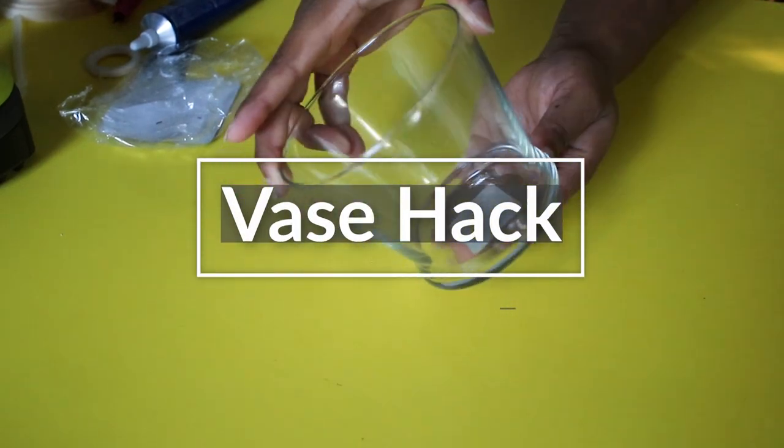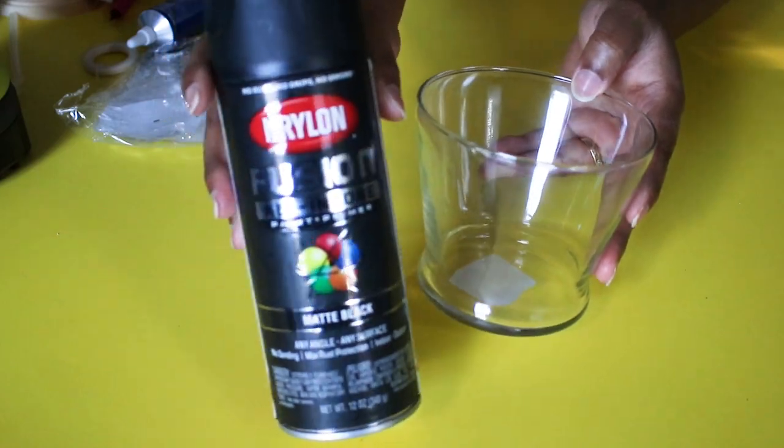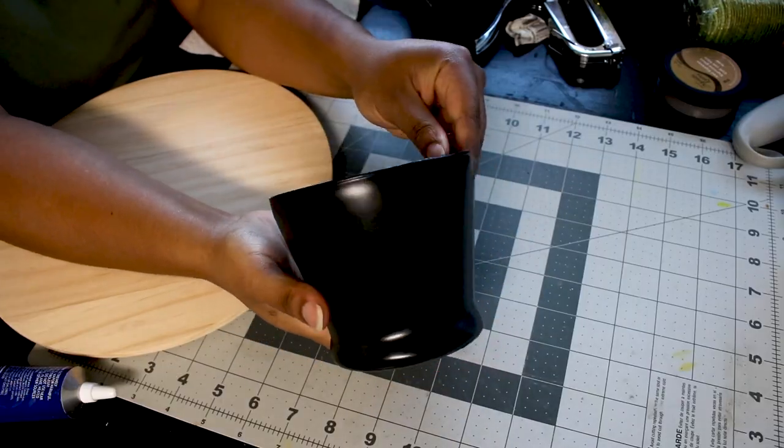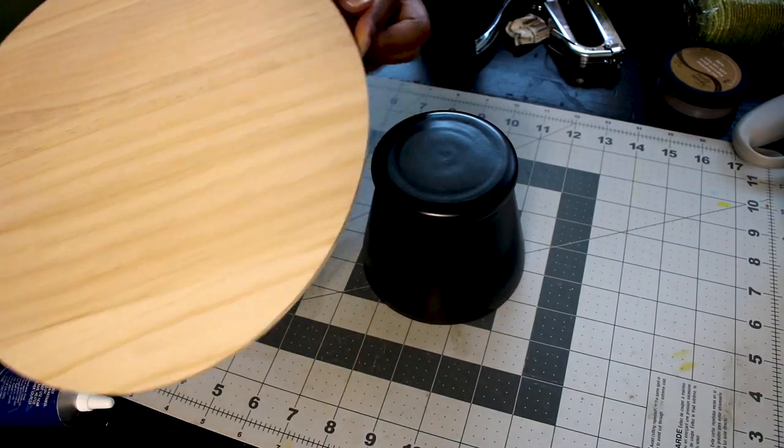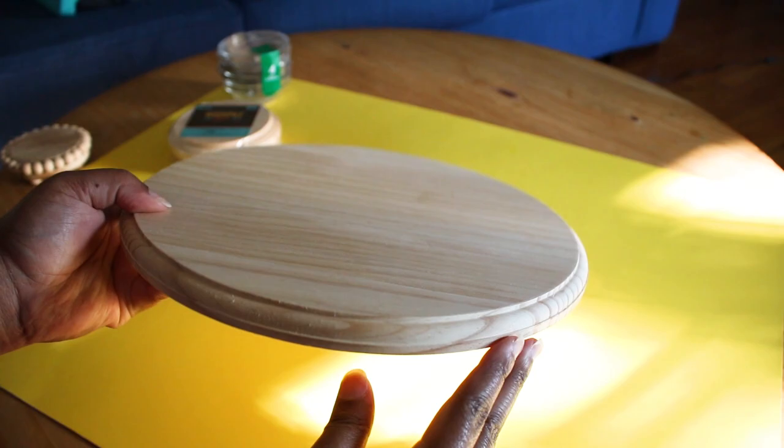This first DIY is super simple. I'm using one of the Dollar Tree glass vases and I spray painted it black. I wanted to make a display stand for some pumpkins, so I used this 11-inch wood round that's also from Dollar Tree.